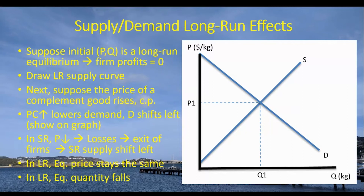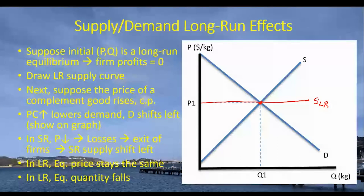One last topic: supply and demand long-run effects — we'll go into more detail next time. Suppose the initial equilibrium at price P1 and Q1 is a long-run equilibrium where profits equal zero. In that case, the long-run supply curve is a horizontal line at that equilibrium price, which is the price that minimizes average cost for the representative firm in the industry.